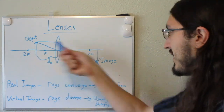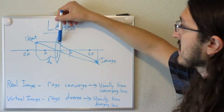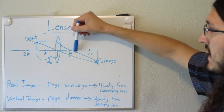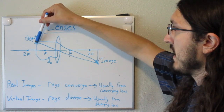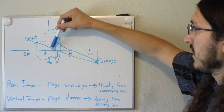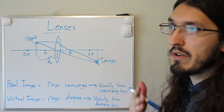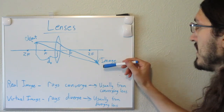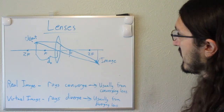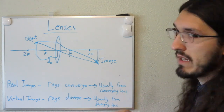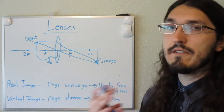To draw the rays: draw a line going straight towards the lens, and then from the center of the lens it goes through the focal point — keep extending that line. For the second line, start at the top of the object, go straight through the center of the lens, and keep extending it until it intersects with the other line. The point where those two rays intersect is where the image is created. In this case the image is flipped, it's beyond two times the focal length on the other side, and it's also magnified. Because the rays converged, this is a real image and an inverted image.